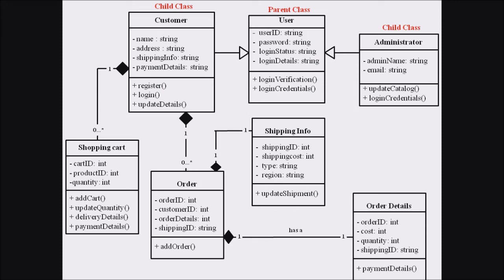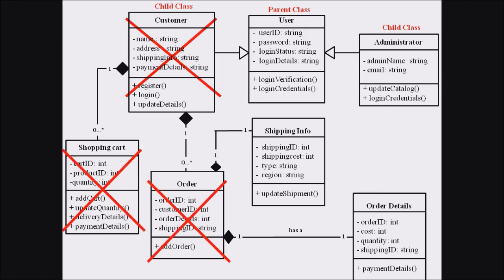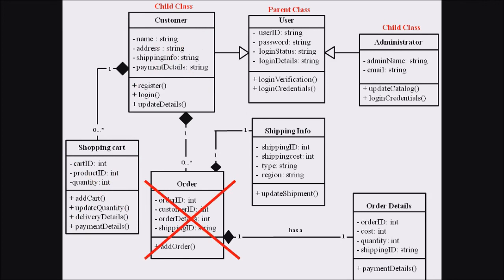These are the different classes associated with this online shopping website. Now, if the Customer class is deleted, all the classes associated with the Customer class should also cease to exist. The Customer class has a composition relationship with the Shopping Cart and the Order class, so deleting the Customer class automatically makes the Shopping Cart and Order class non-existent as well. Similarly, if the Order class is deleted, the Shipping Information class and the Order Detail class cannot exist without the Order class.